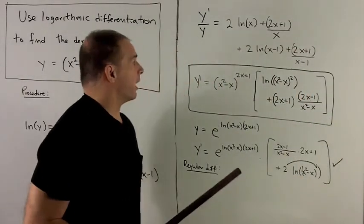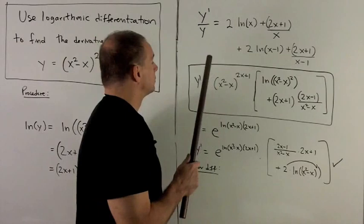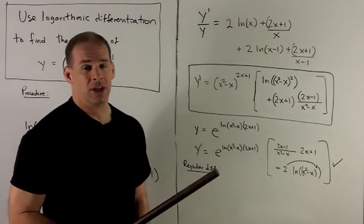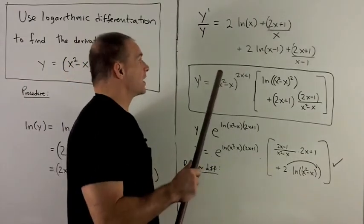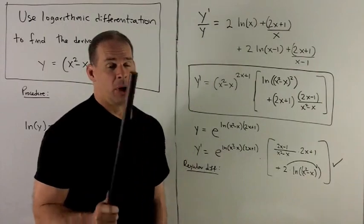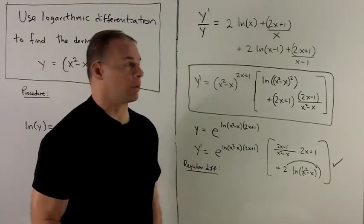Let's take a look at how we do that. So derivative of natural log of y, y is a function of x, so I have to chain rule. So that's going to say take what's on the inside, which is y, put it in the bottom, then multiply by the derivative of the inside, which is just y prime.